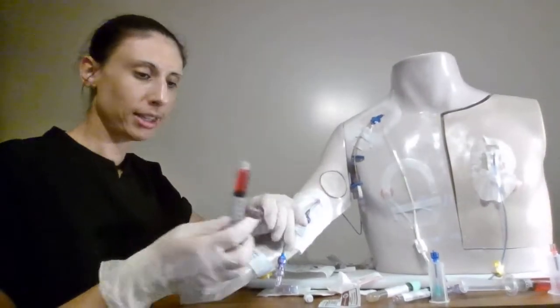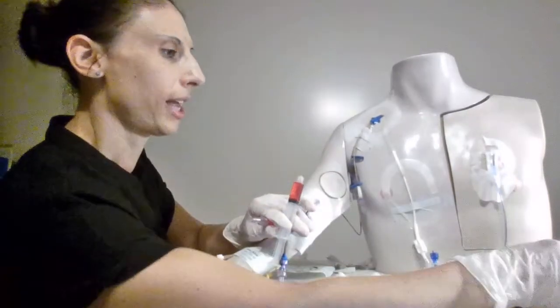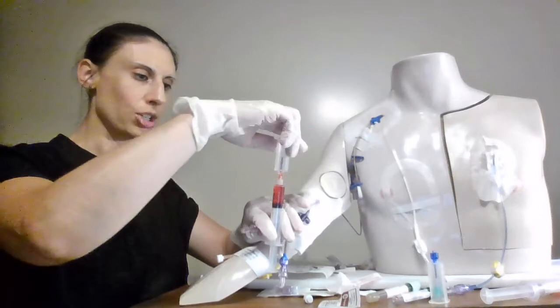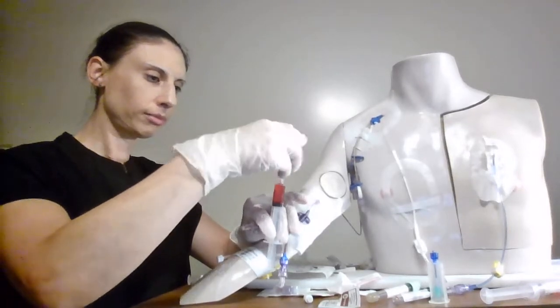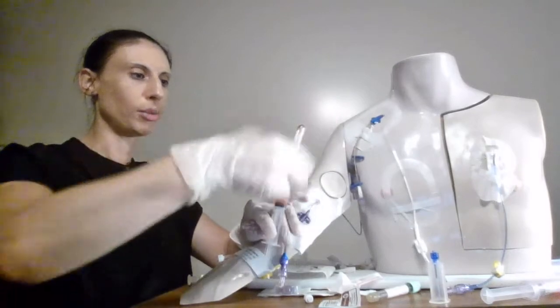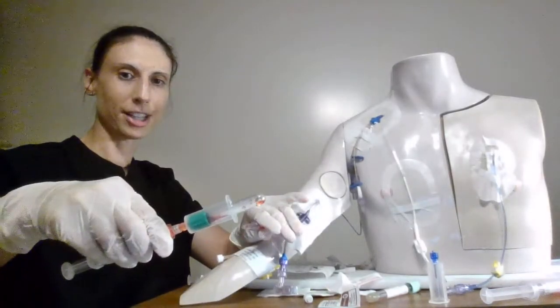Now if I'm using the syringe method I'm going to need to transfer that. So I would take one of these pink cap vacutainers. Attach it to the end. And then I would attach my blood tube onto there. So you can see how that fills a little bit better.